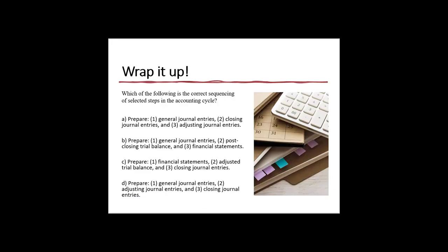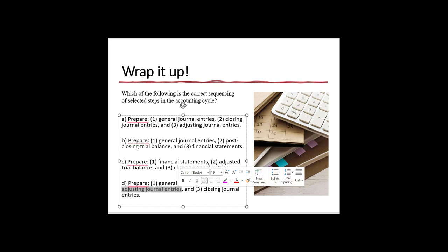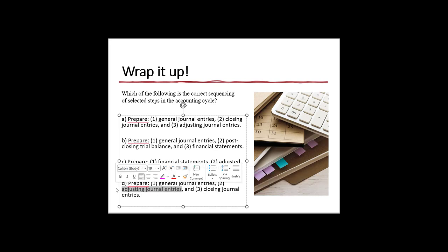One more question to wrap up: which of the following is the correct sequencing of selected steps in the accounting cycle? The correct answer is D — first we prepare our general journal entries, then we prepare our adjusting journal entries, and lastly we have our closing journal entries.